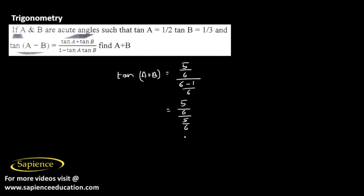We can cancel these two terms because 5/6 divided by 5/6. It's in the denominator, so if we bring it to the numerator we write the reciprocal. 6 and 6 will get cancelled, 5 and 5 will get cancelled, and we get tan(A + B) equals 1.